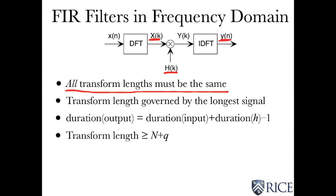Furthermore, the output is derived from an inverse DFT, so the duration of this transform here has to be of the same length as this one and the one that's implicit here. So the transform length, what determines it is how long the signal is. The length of the signal, you have to take a transform that's at least as long as the signal.